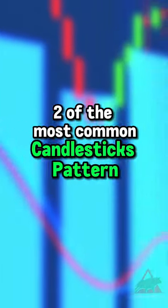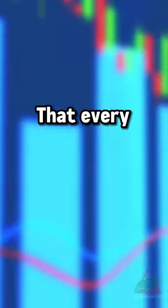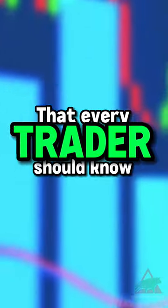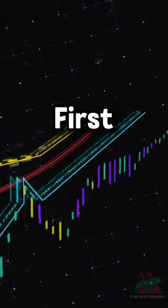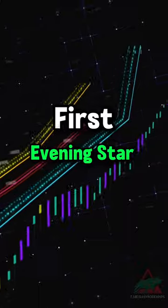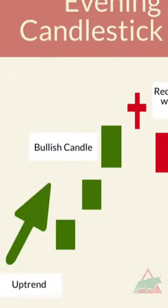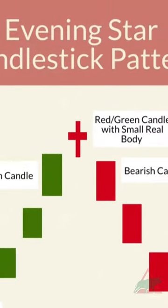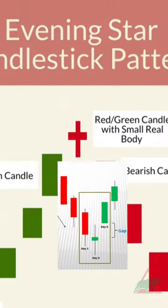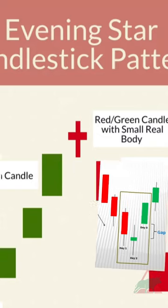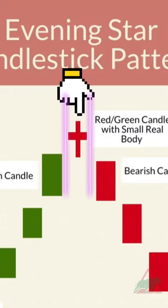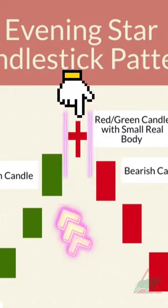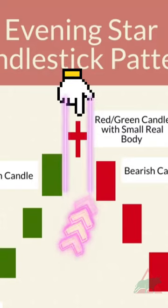Here are two of the most common candlestick patterns that every trader should know. First, the evening star. The evening star is a three candlestick pattern that is the equivalent of the bullish morning star. It is formed of a short candle sandwiched between a long green candle and a large red candlestick.